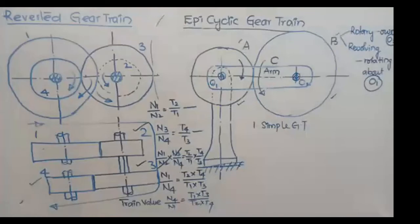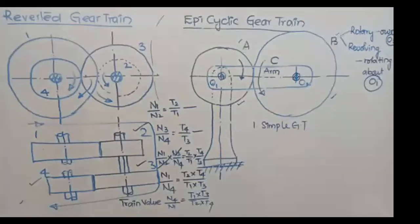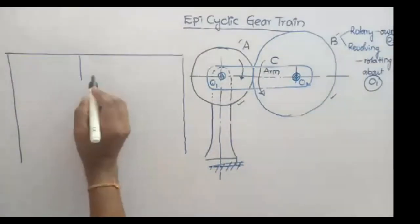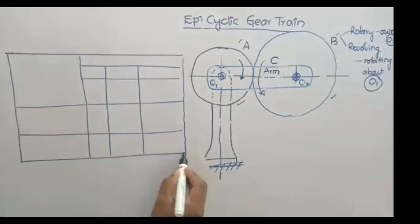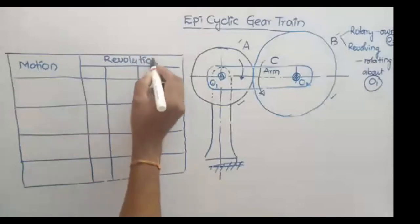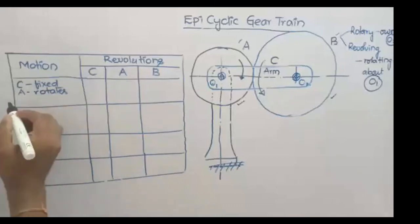The velocity ratio of this epicyclic gear train is explained by two methods: one is the tabular method, and another is the algebraic method. If you want to find out the velocity ratio, you need to consider either the tabular method or the algebraic method. We will use the tabular method, which is simpler for solving problems.